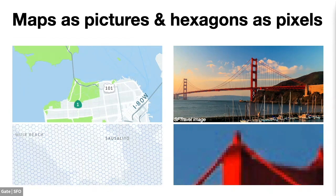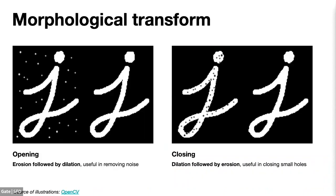How did we do that? You can think of a map as your picture, and the hexagons inside as your pixels. That enabled us to use a computer vision technique called morphological transformations — an image processing technique typically used on binary images. The two basic operators in morphological transforms are erosion and dilation, terms borrowed from soil transformation, and you'll see why they're very similar.